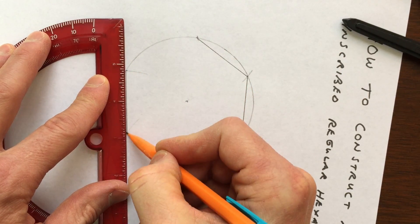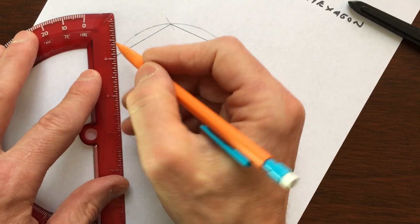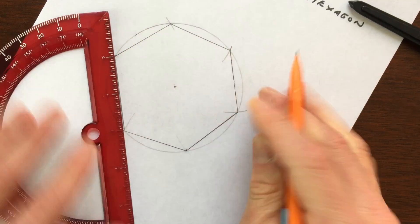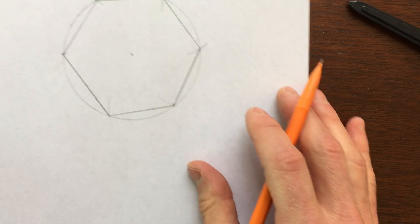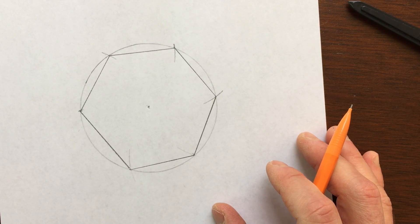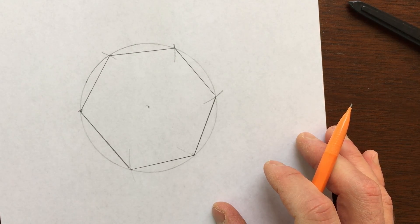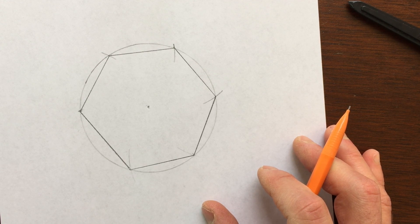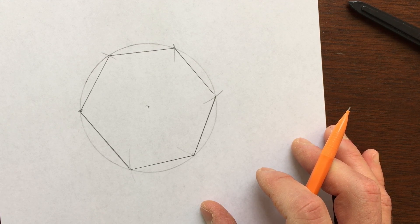So what a regular hexagon is: all the sides are going to have the same length and all the interior angles are going to have the same measurement. You can see it came out pretty good—not exact, but pretty accurate. So this has been a quick video about how to do an inscribed regular hexagon.